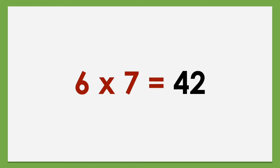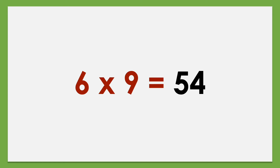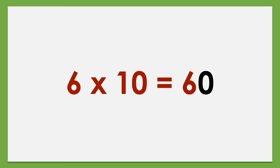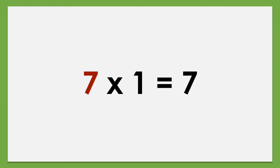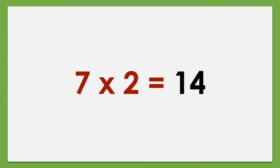6 times 7 equals 42. Set of 7: 7 times 1 equals 7, 7 times 2 equals 14, 7 times 3 equals 21.